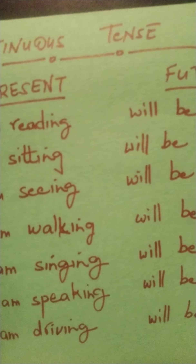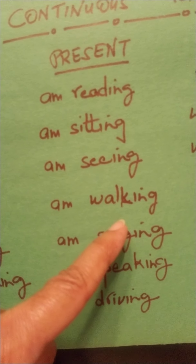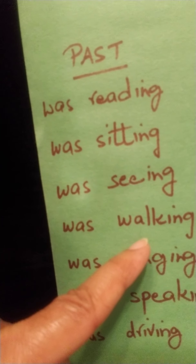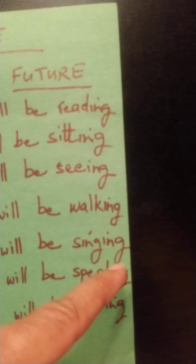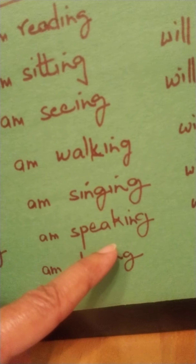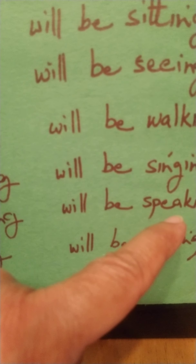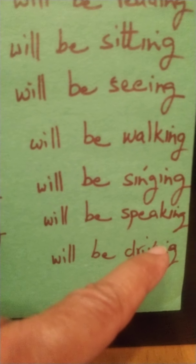Future continuous — continuous means lagataar. I am walking. I'm walking on the street. I was walking on the street yesterday. I will be walking on the street tomorrow. Then we look at speaking: I am speaking to my friend. I was speaking yesterday with my friend. I will be speaking with my friend tomorrow — or 'will be speaking to my friend tomorrow'; do noo theek hai, both are fine.